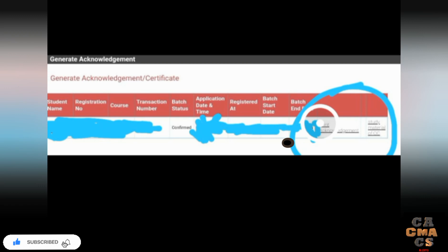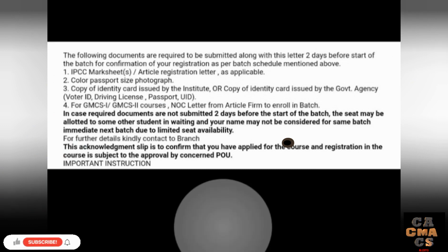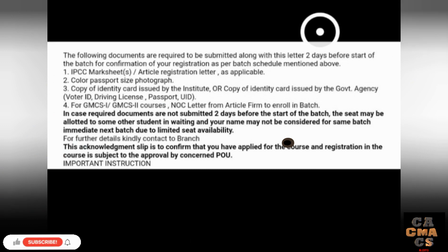To get the acknowledgement, go to your dashboard again, go to the ICITSS tab, and tap 'Generate Acknowledgement' in the middle. Tap on that and it will show 'Print Acknowledgement.' Download it, then go to a print center or use your home printer to print it out.